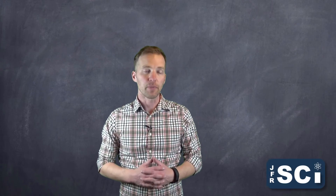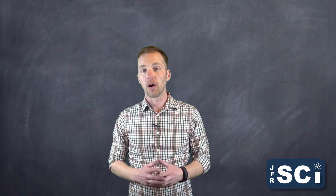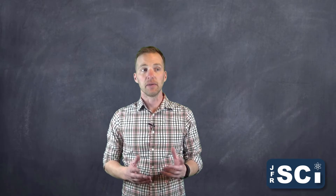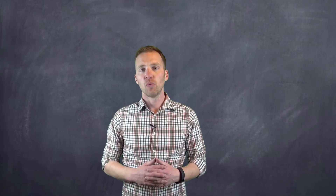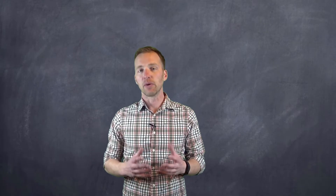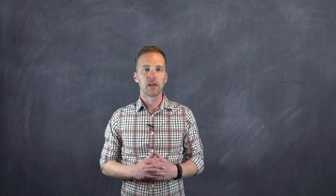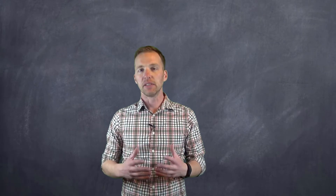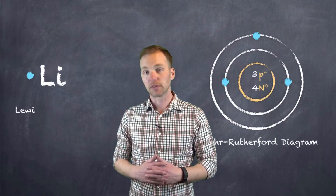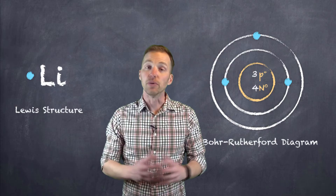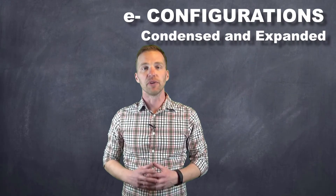With our introduction into quantum theory, we have a better understanding of what our model of the atom would look like, and a more accurate representation of what the electrons might look like when we take a look at those quantum numbers. With a better understanding of the atom, we need a different way of representing it, as opposed to Bohr-Rutherford diagrams or Lewis structures. We refer to these representations as electron configurations.